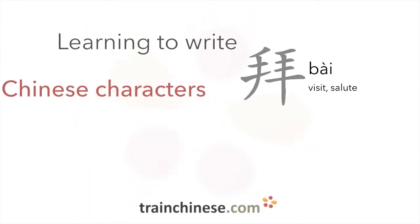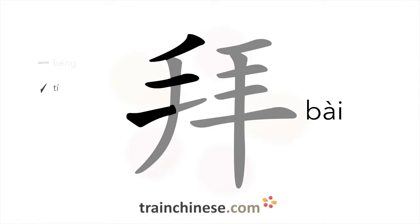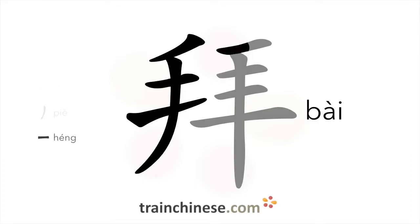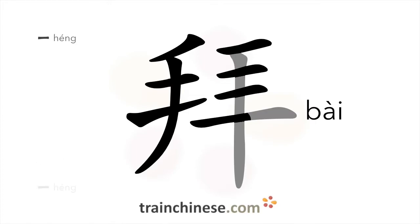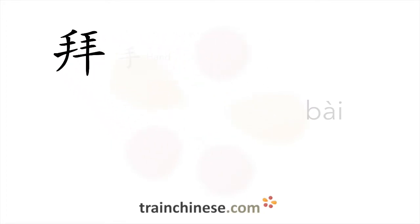Let's take a look at this character. This one has nine strokes. Let's look at what goes into this character. You can see the hand radical in this character.